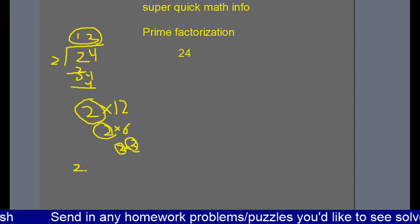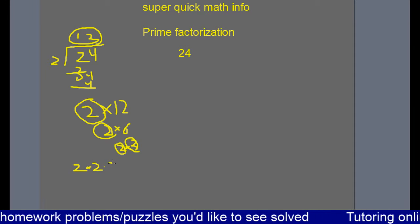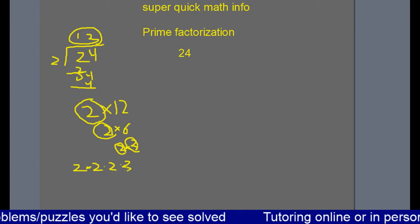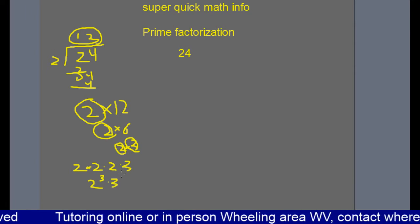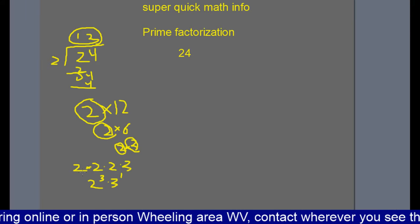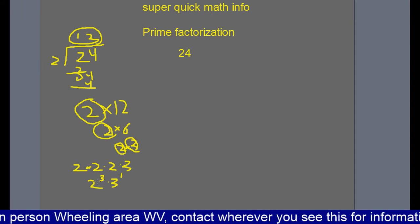And our prime factorization is 2 times 2 times 2 times 3. You may also be told to write this as 2 to the third times 3 to the first, meaning three 2s multiplied times one 3 multiplied.